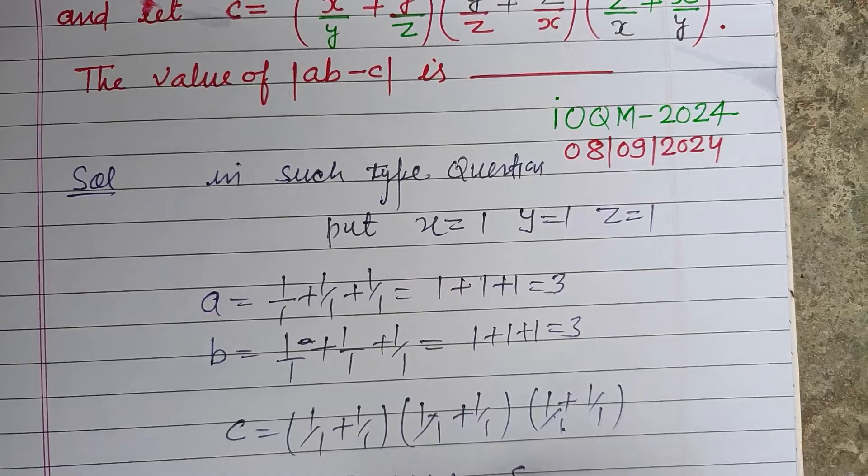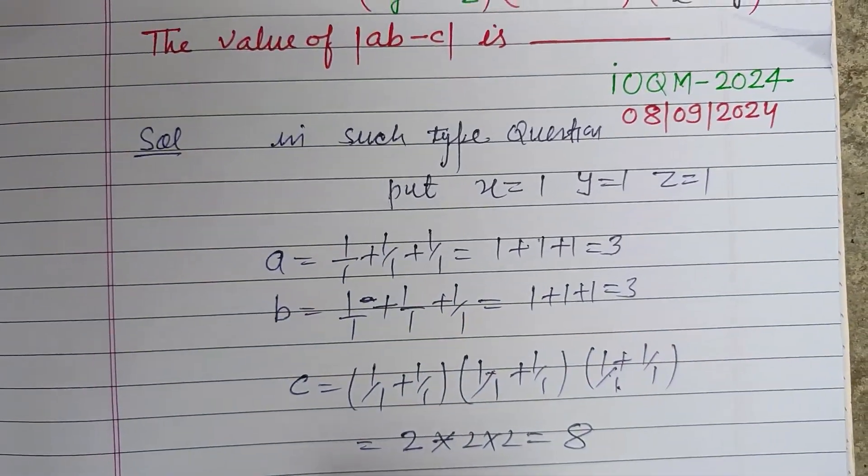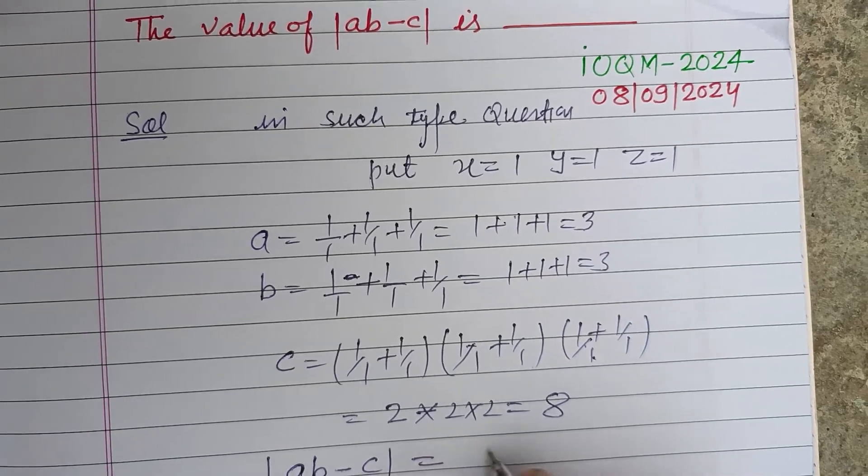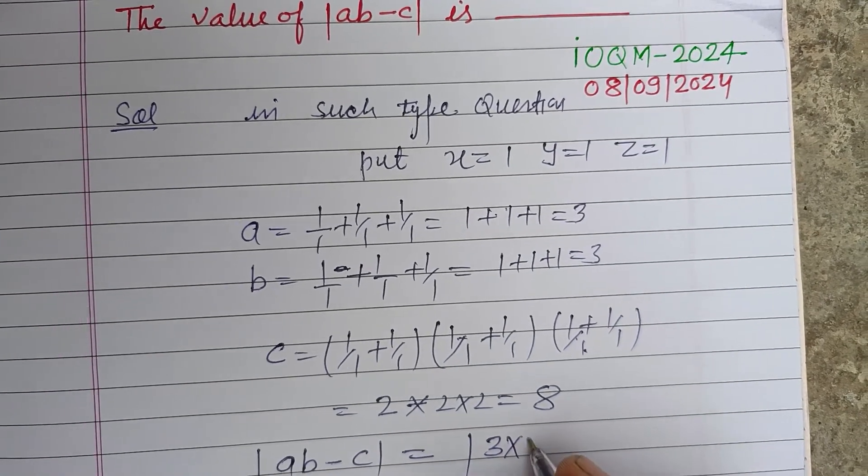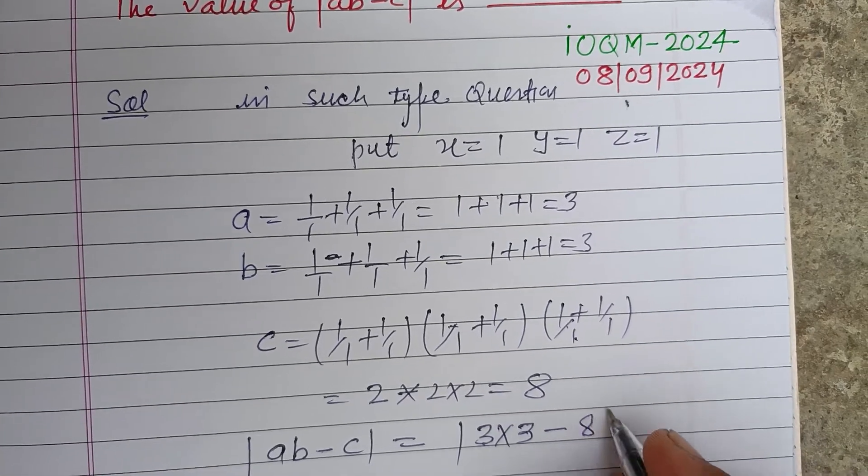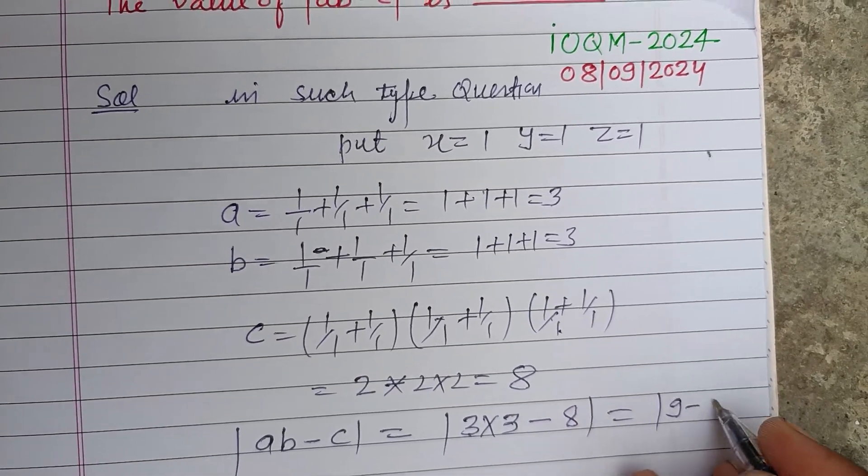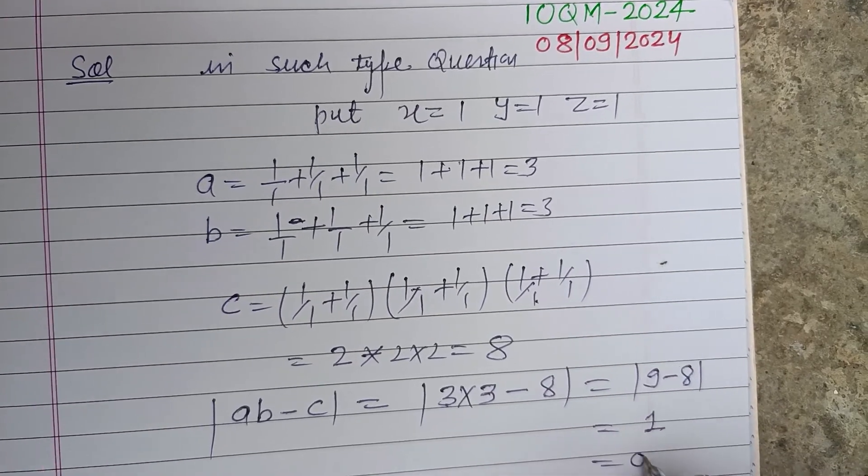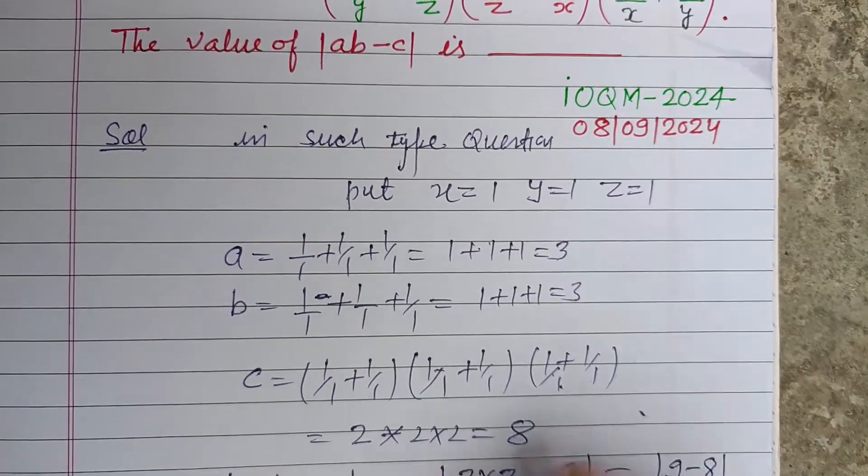Now you require mod of ab minus c. So a is 3, b is 3, and c is 8. So this is 9 minus 8, that is 1, or we write 01. So 01 is the correct answer of this question.